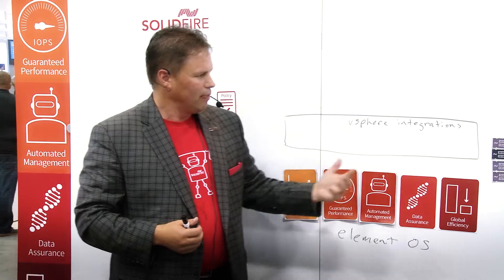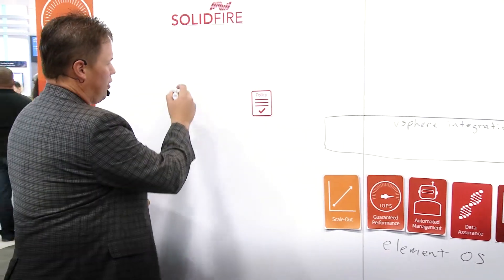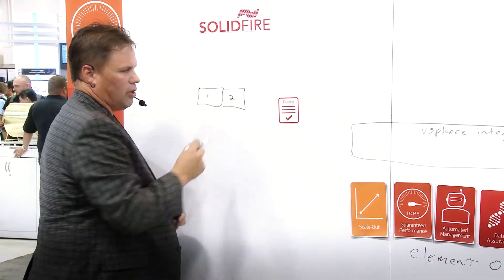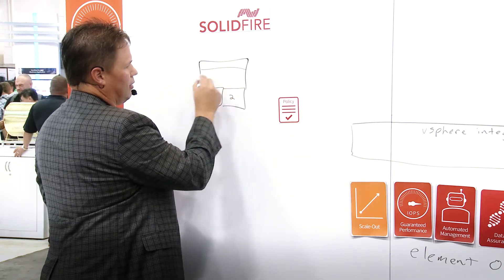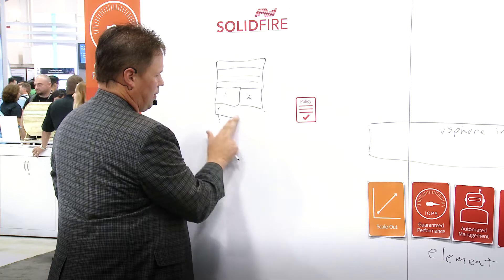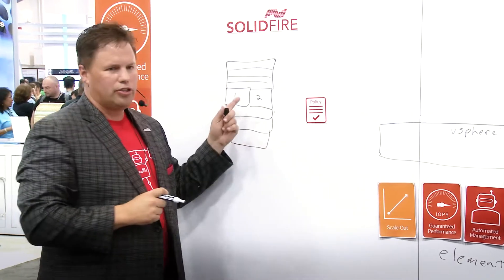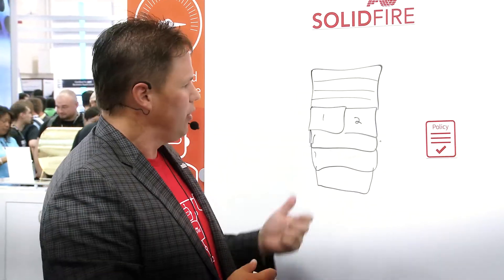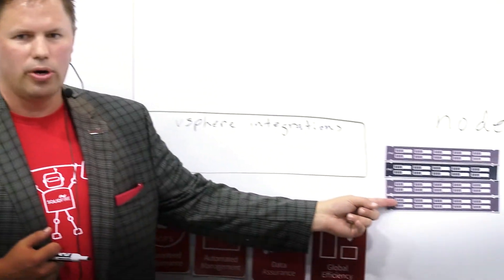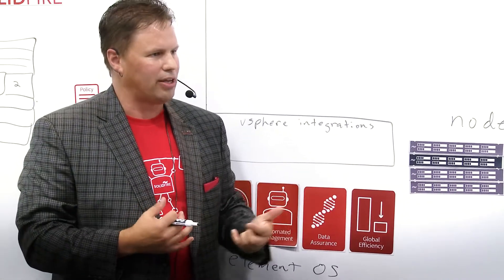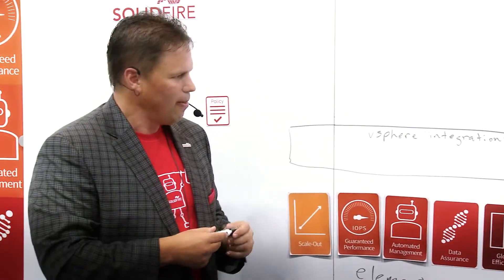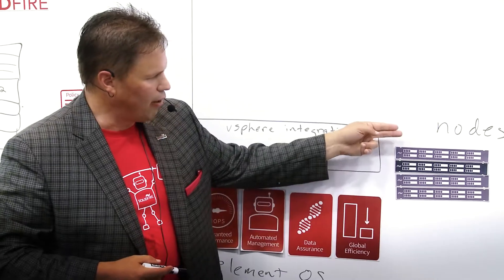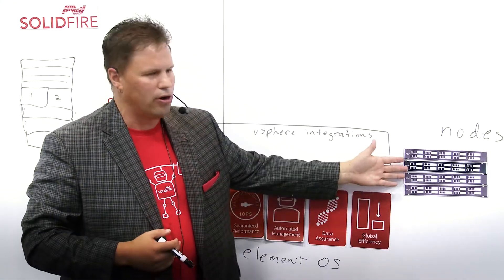What does scale-out mean for a VM? Instead of having controller-based architectures based off of two controllers with disk shells that do nothing but add capacity, scale-up architectures leave you stranded into silos of storage for your VMs. What a consumer really wants is an elastic model where you take a very small unit — a 1U node — that delivers 50,000 IOPS with varying levels of capacity. We have four sizes of nodes. This allows you to create clusters and expand by adding a fifth, sixth, or seventh node, scaling from four nodes all the way up through 100 nodes.